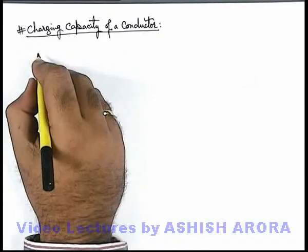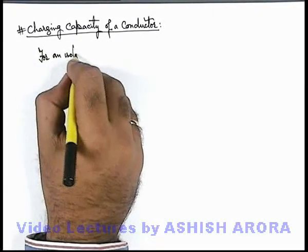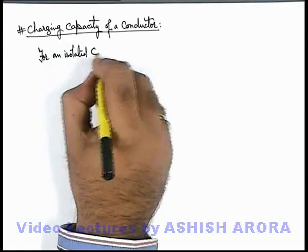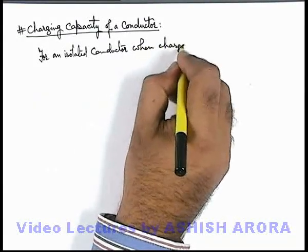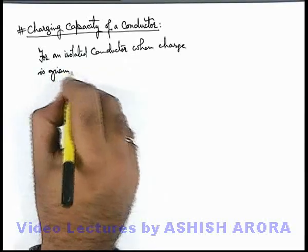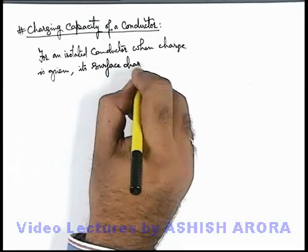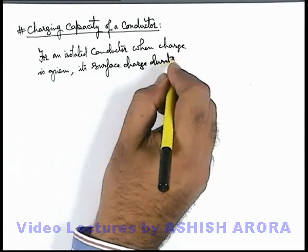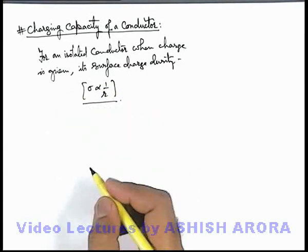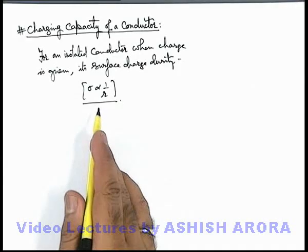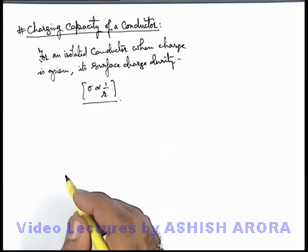For an isolated conductor, when some charge is given to it, its surface charge density sigma is inversely proportional to the local radius of curvature, which we already studied. This is because the whole metal has to be equipotential, and at every interior point the electric field has to be zero.